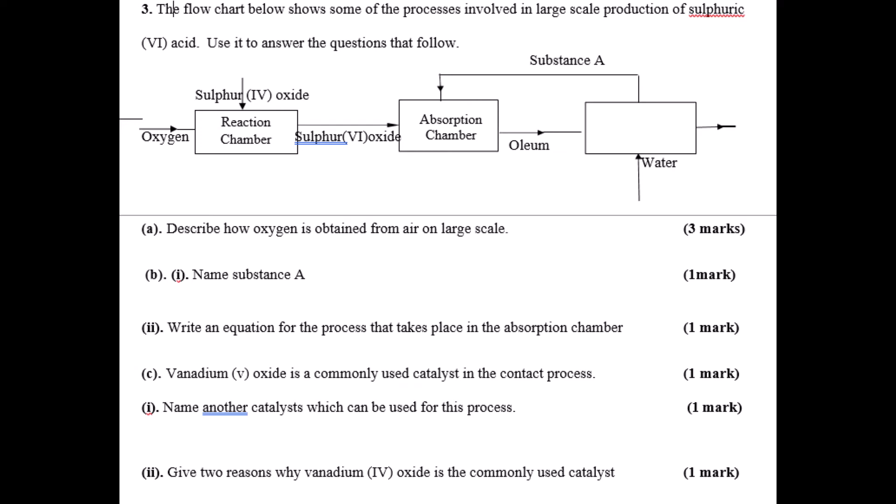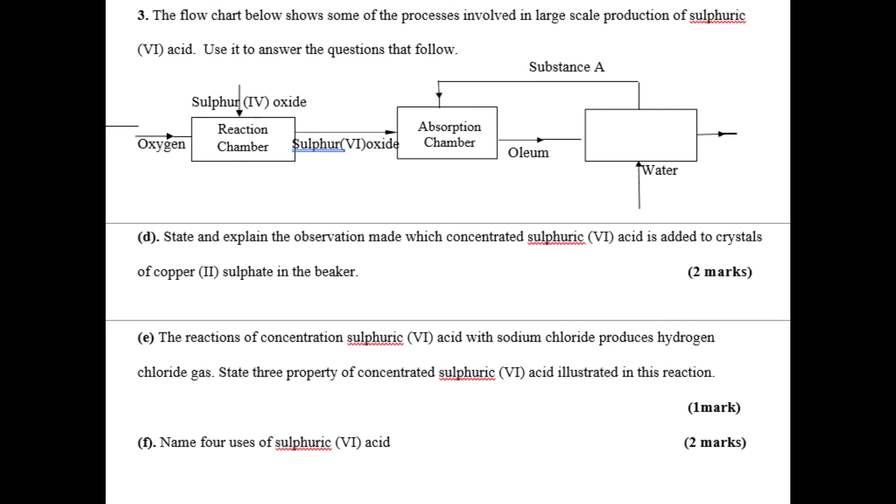Part D: state and explain the observation that will be made when concentrated sulfuric acid is added to crystals of copper sulfate in a beaker. The reaction between concentrated sulfuric acid and sodium chloride will produce hydrogen chloride gas. State three properties of concentrated sulfuric acid illustrated in this reaction. Part F: state four uses of sulfuric acid.